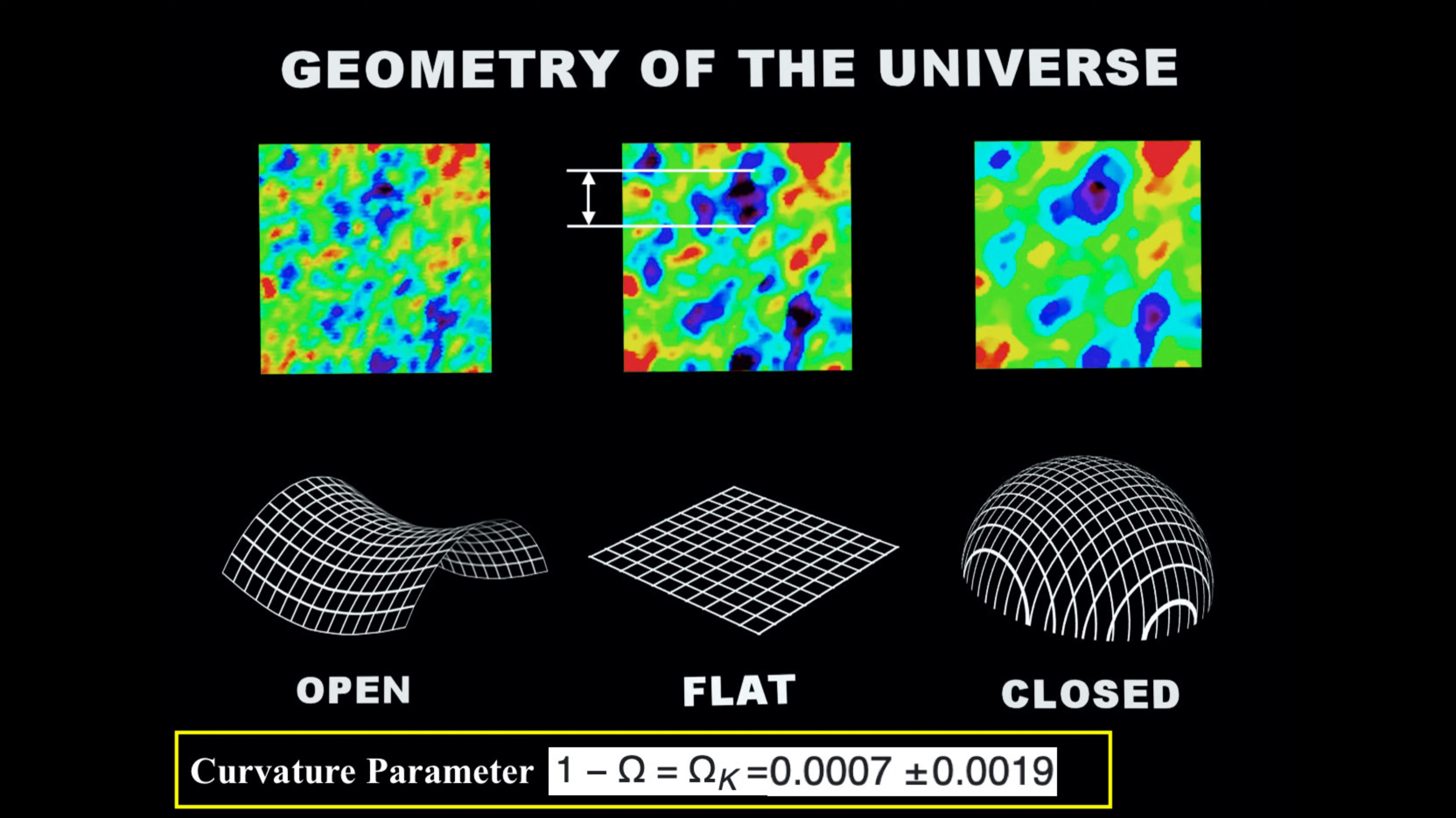Technological advancements have refined our measurements of the universe's curvature. Based on the 2018 results of the Planck mission, the curvature parameter of the universe, Omega K, is tightly constrained to be very close to zero, with a value of 0.0007.